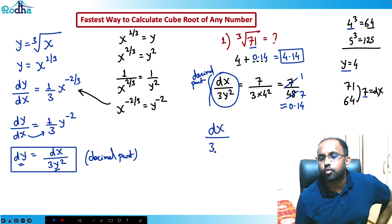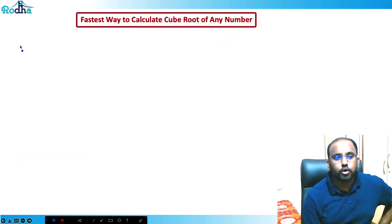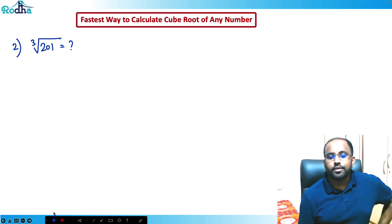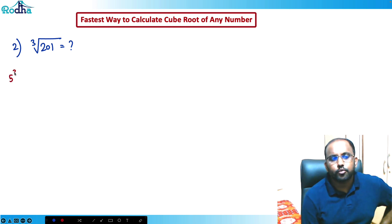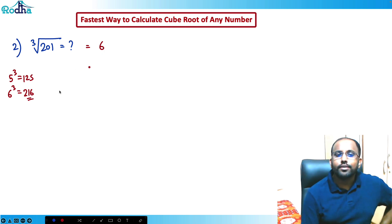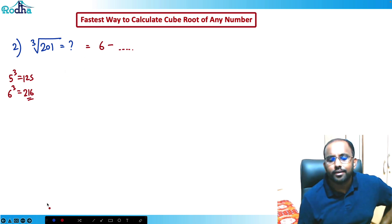Now let's calculate the cube root of 201. I know it's between 5³ = 125 and 6³ = 216. The nearest perfect cube is 216, so y = 6. The answer should be 5-point-something since 201 is between 125 and 216, and the decimal part will be subtracted from 6.